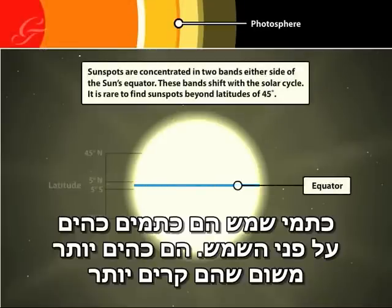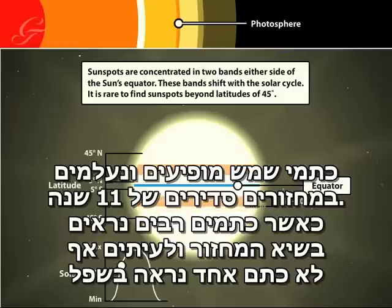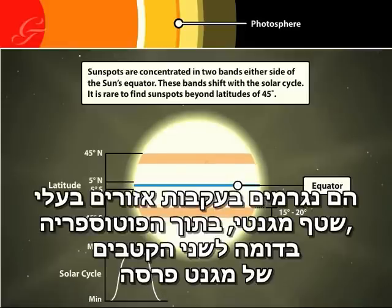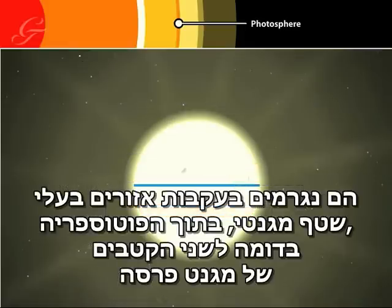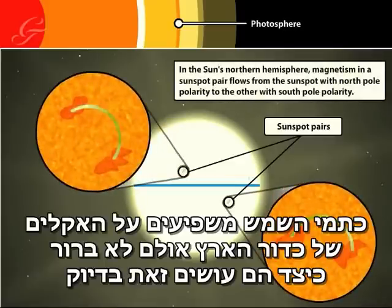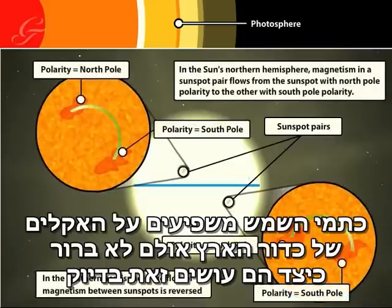Sunspots are darker patches on the surface of the Sun. They are darker because they are cooler. Sunspots come and go in regular 11-year cycles, with many visible at the peak of the cycle and often none visible at the minimum. They are caused by regions of magnetic flux within the photosphere, like the two poles of a horseshoe magnet. Sunspots are thought to have an influence on the Earth's climate, but exactly how this happens is still unclear.